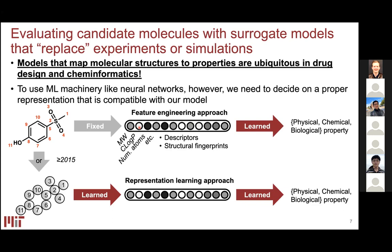Since around 2015, the trend has been to use neural networks' strength at representation learning. If we provide access to the full chemical structure, the network can learn the relevant features required to regress to a property. A classical example: given a list of molecules and their solubilities, we want to learn the mapping from structure to solubility.